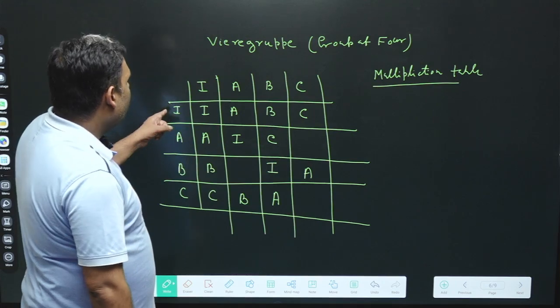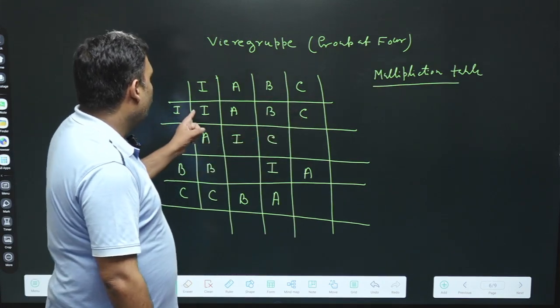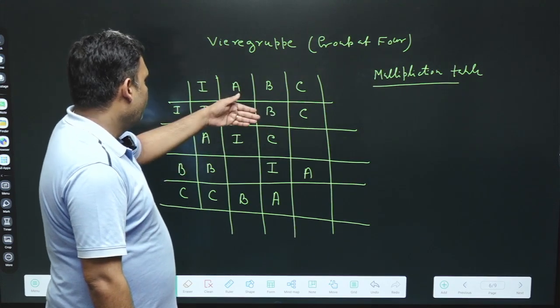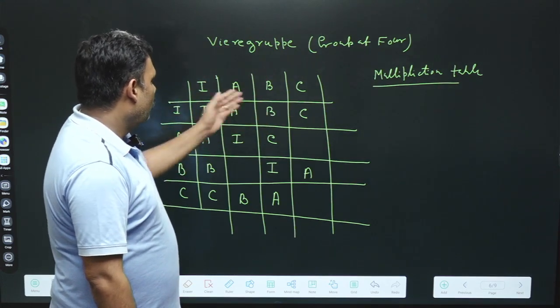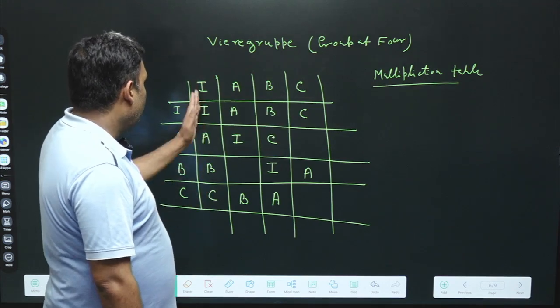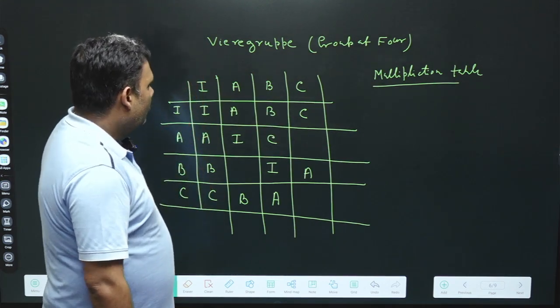You can see the first will be always identity. So you will have I, A, B, C just repeating, just like the first row, and here the first column will be also with I. So there is not any problem.